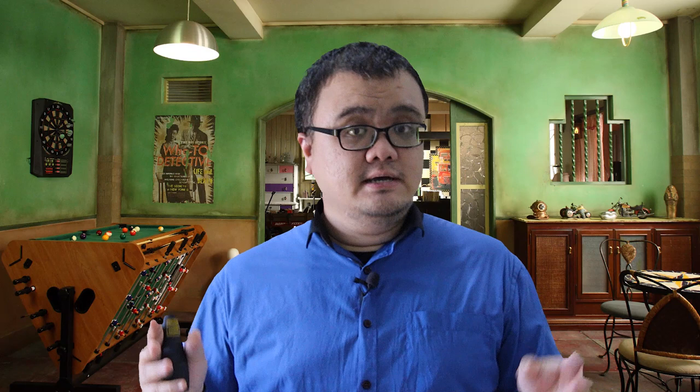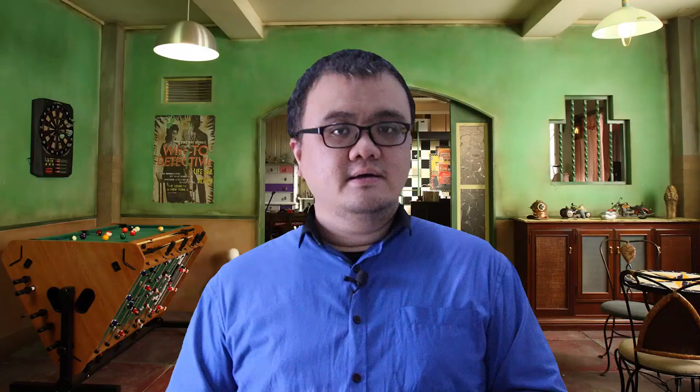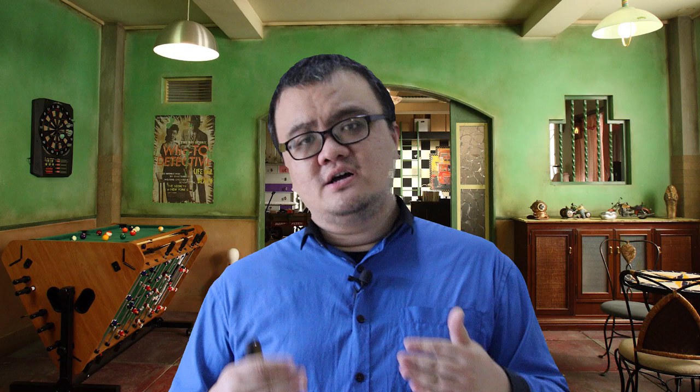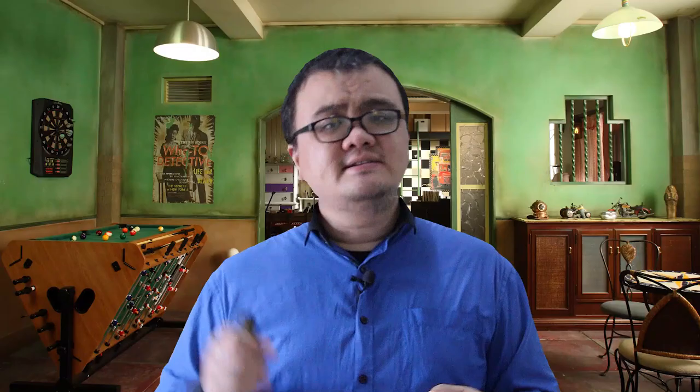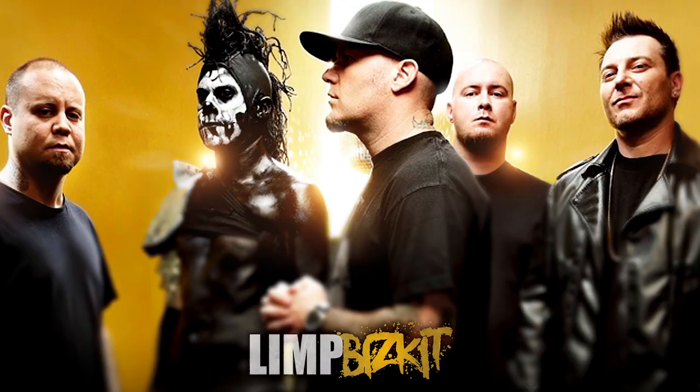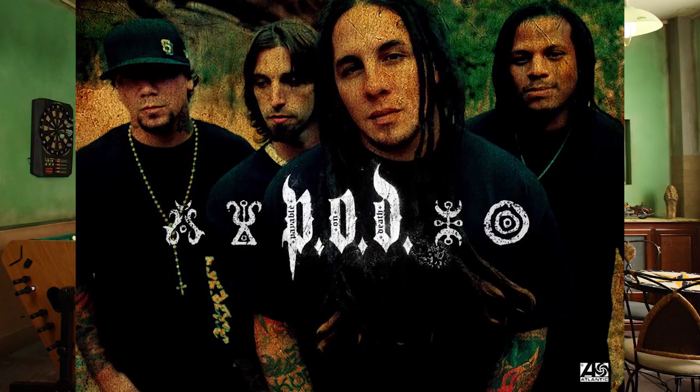Chicken katsudon: if you go to many Japanese restaurants in Malaysia, you will find this dish. The traditional Japanese katsudon uses pork, but because Malaysia is a predominantly Muslim population, many do not eat pork — hence the change to cater to local tastes and needs. Vegetarian meat is becoming more and more popular around the world, very popular among the Chinese community especially during Chinese New Year — basically pieces of soy processed to look like actual meat. Hip-hop and rock music are two quite different genres, but since the early 2000s many bands have combined these styles to create a new genre with a pretty good following.